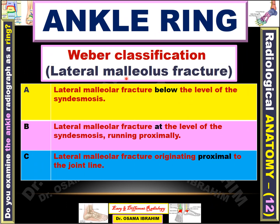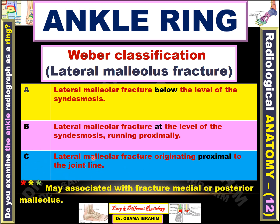What is the Weber classification of lateral malleolus fractures? According to the site of the lateral malleolus fracture, we classify it as A, B, or C. Weber A: lateral malleolus fractures below the level of the syndesmosis. Weber B: at the level of the syndesmosis, running approximately at that level. Weber C: if the lateral malleolus fracture originates proximal to the joint. These lateral malleolus fractures are sometimes associated with fractures at the medial or posterior malleolus of the tibia, so you should scrutinize these regions closely to avoid missing these fractures.